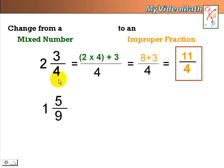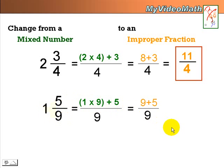Let's look at another example: 1 and 5 9ths. Again, it takes the whole number, multiply by the denominator, and then add it with the numerator. 1 times 9 plus 5 equals 14 over 9. And that is a converted improper fraction.